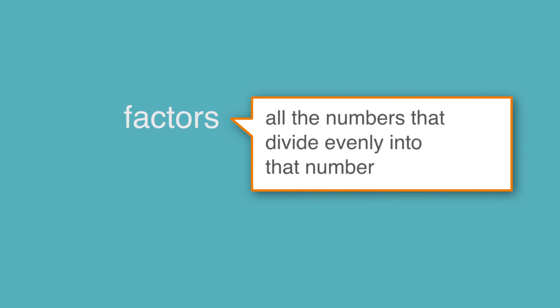The factors of a number are all the numbers that divide evenly into that number. Basically, they're numbers that you can multiply to get the number you want. You might remember that every number has one and itself as factors. If it doesn't have any other factors, it's considered prime.